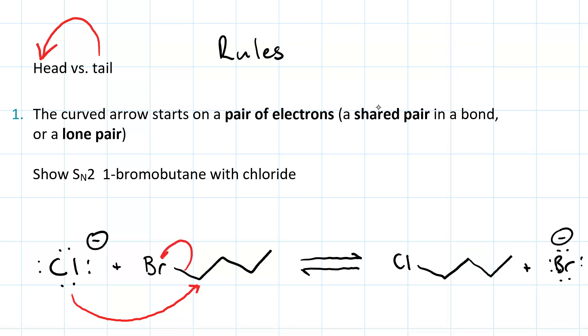And then we have loss of a leaving group. So the nucleophilic attack changes a lone pair to a sigma bond, and the loss of a leaving group changes a sigma bond to a lone pair. Note that these curved arrows preserve the octet rule.